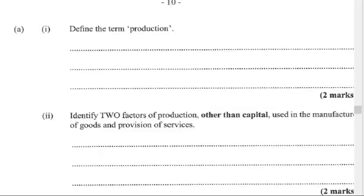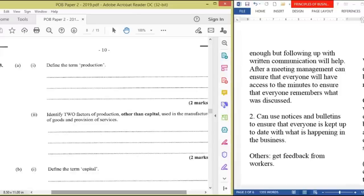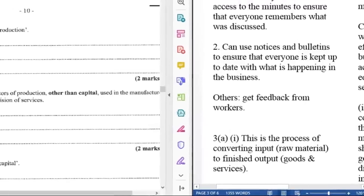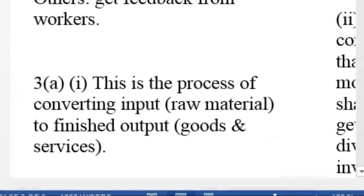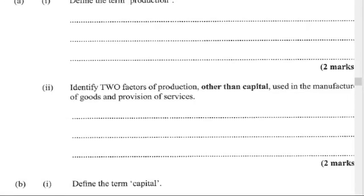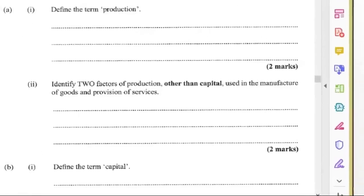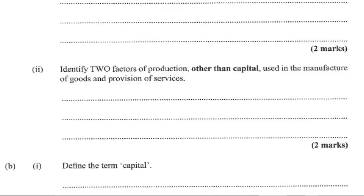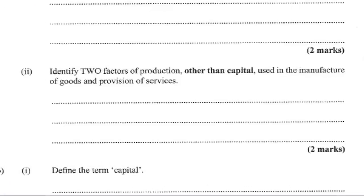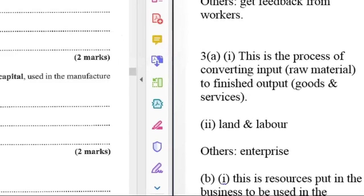We are now at number 3, question 3A1. Define the term production. Production is the process of converting input, that is raw material, to finished output goods and services. A2, identify two factors of production other than capital used in the manufacture of goods and provision of services. We have land and labor. You could also put enterprise.